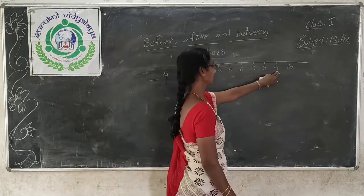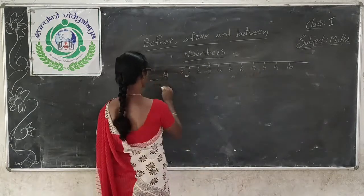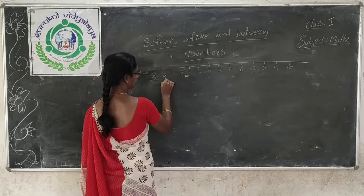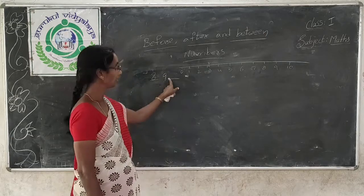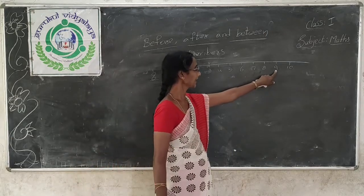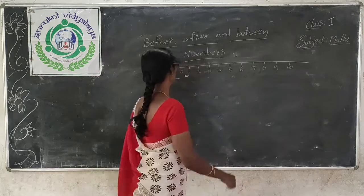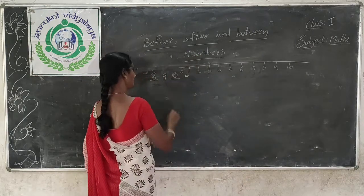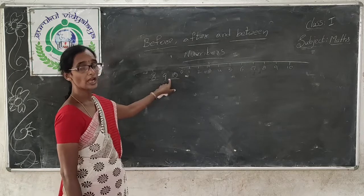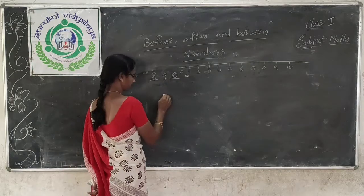9 is there. Which number is before 9? 8. And what comes after 9? 9 after which number is there? 10. So 8 comes before 9 and 10 comes after 9.